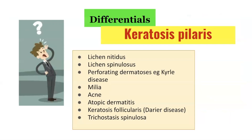What are the differentials for keratosis pilaris? These include lichen nitidus, lichen spinulosis, perforating dermatoses such as Kyrle's disease, milia, acne, atopic dermatitis, keratosis follicularis (Darier's disease), and trichostasis spinulosa.